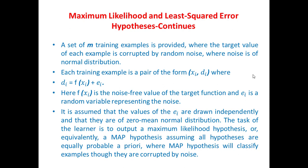Here, di = f(xi) + ei, where f(xi) is the noise-free value of the target function and ei is a random variable representing the noise. It is assumed that the values of ei are drawn statistically independently and they follow a zero-mean normal distribution, that is, a Gaussian distribution. The task of the learner is to output a maximum likelihood hypothesis, or equivalently a MAP hypothesis, assuming all hypotheses are equally probable a priori.